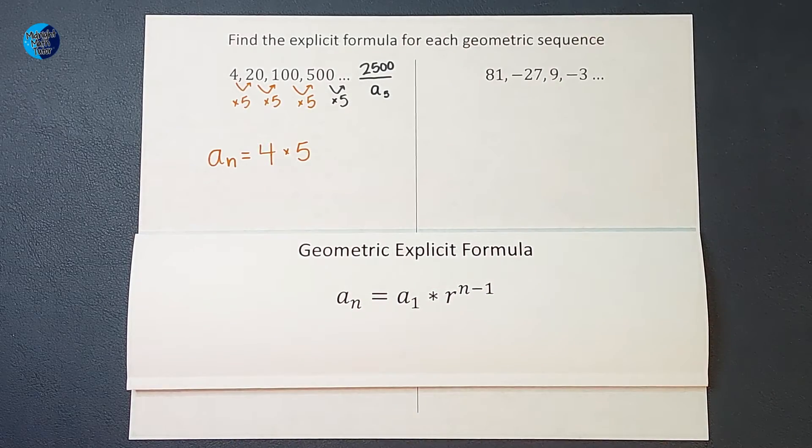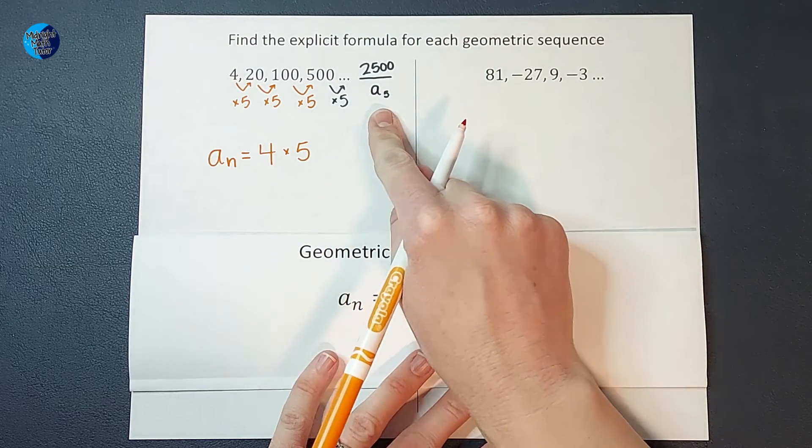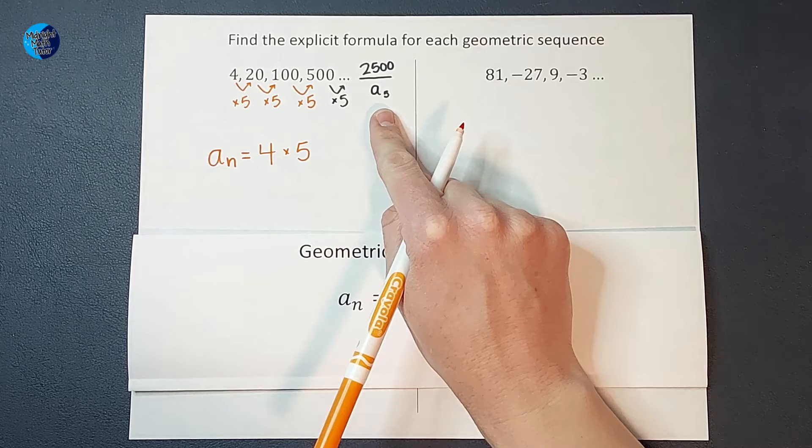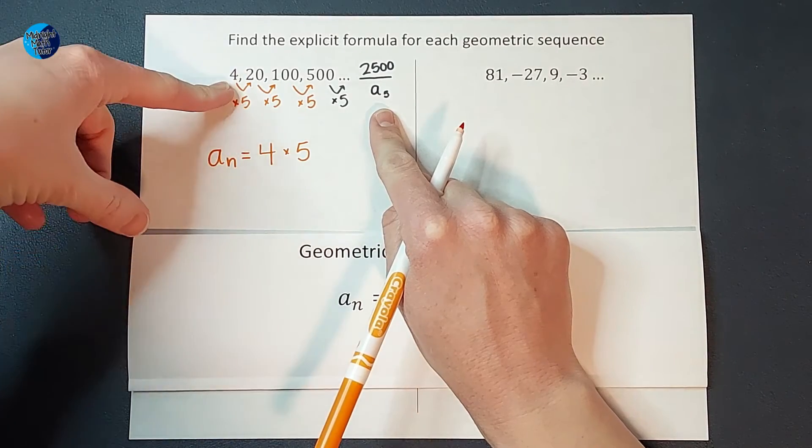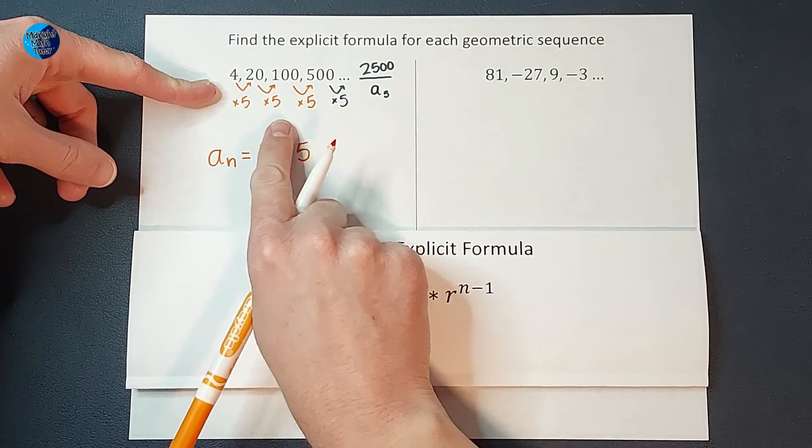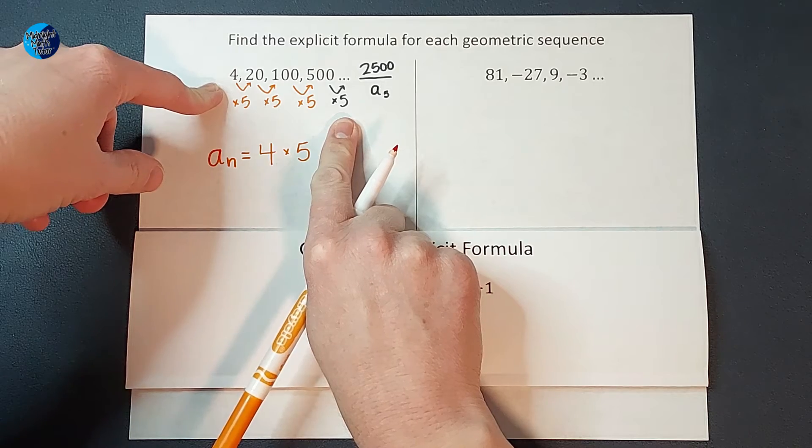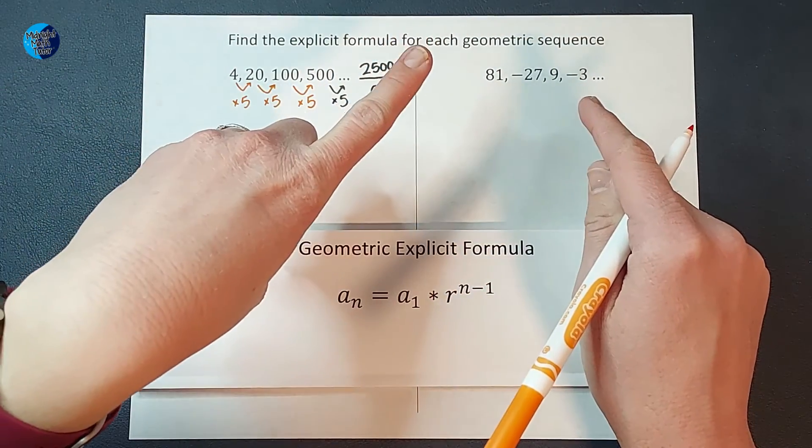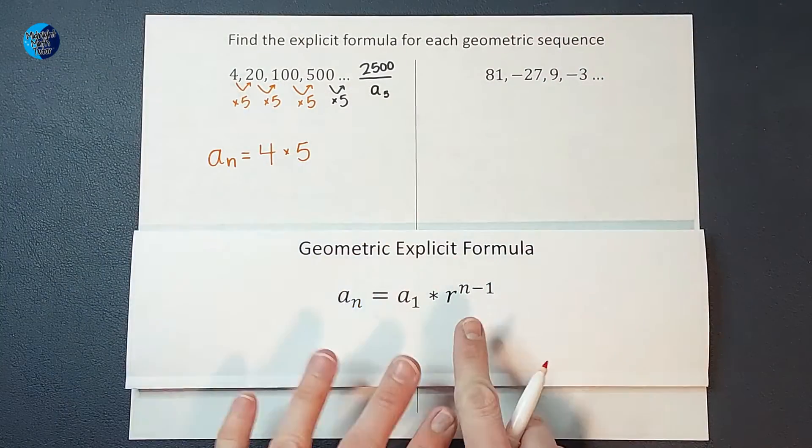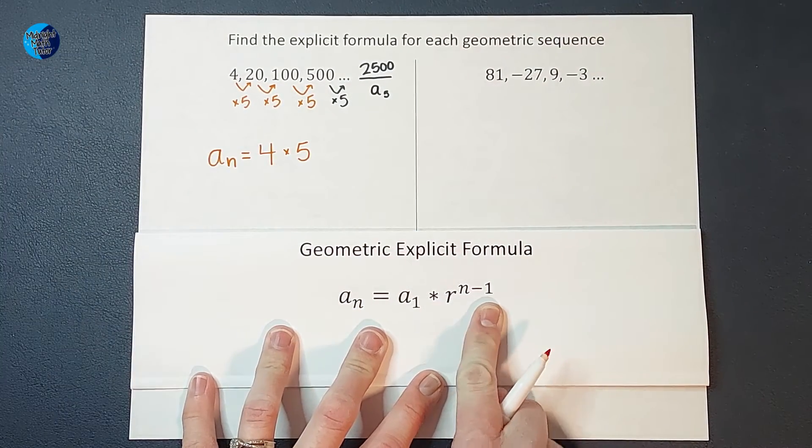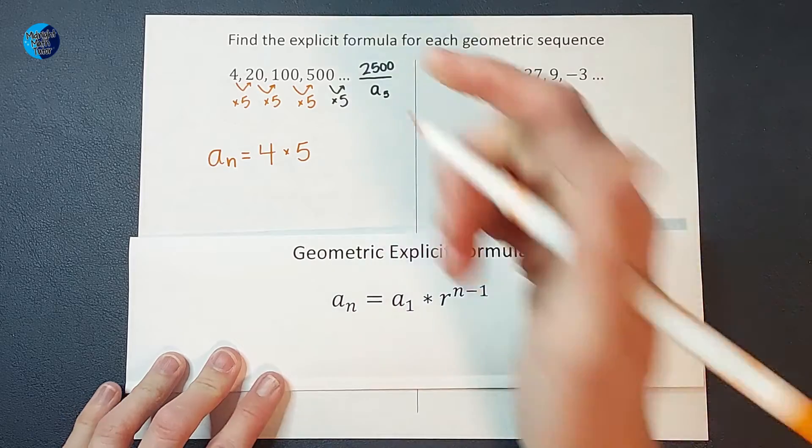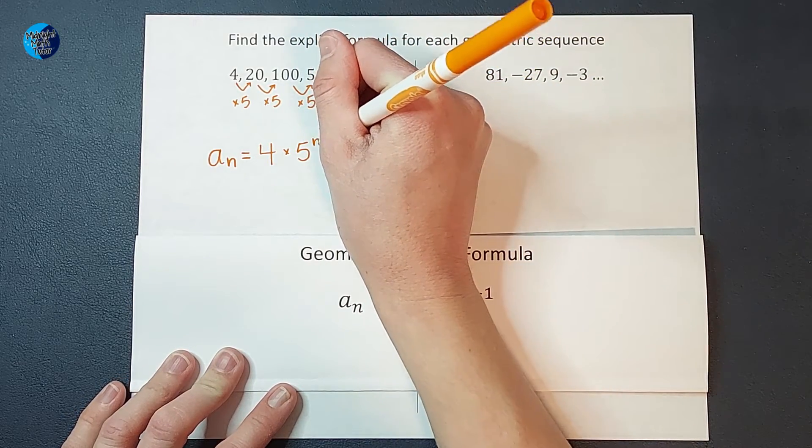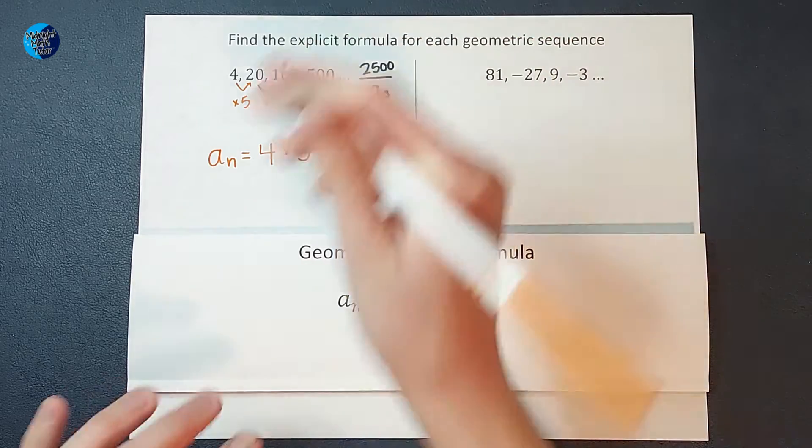I want you to think about this for a minute. When we found the fifth term, how many times had we multiplied by 5 from the beginning? We multiplied 1, 2, 3, 4 times to get the fifth term. One less time than the number we wanted. That is where this N minus 1 comes in. So we are going to have 4 times 5 to the N minus 1 power.